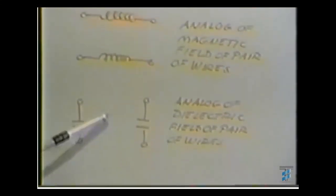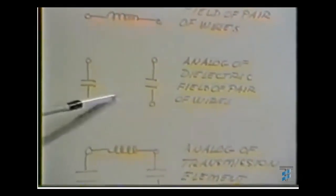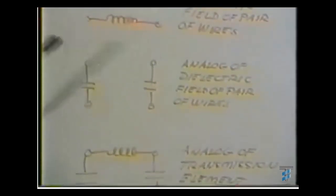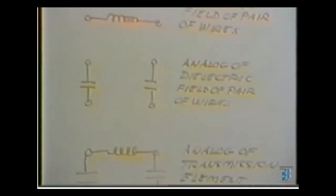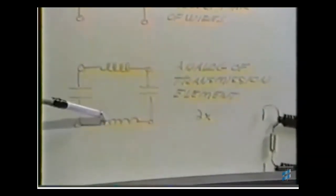The analog of the dielectric field will be a pair of capacitors, and these can be any form from mica to oil depending upon exactly what you want to do. And when we combine these two together, then we have the analog of the complete transmission element.